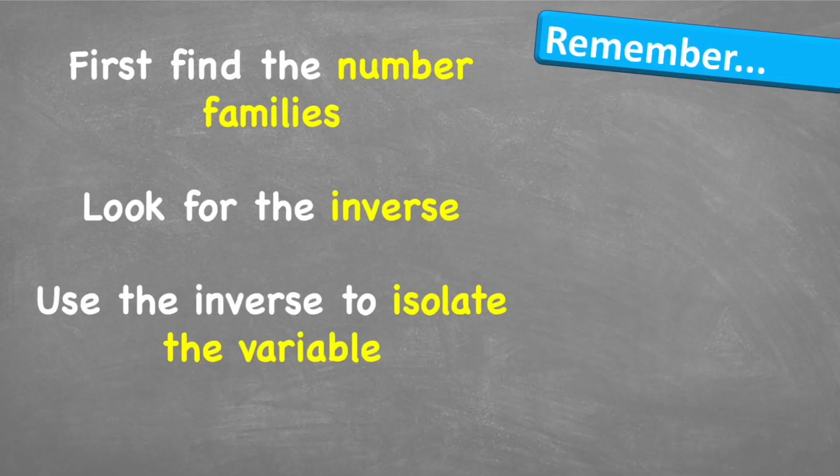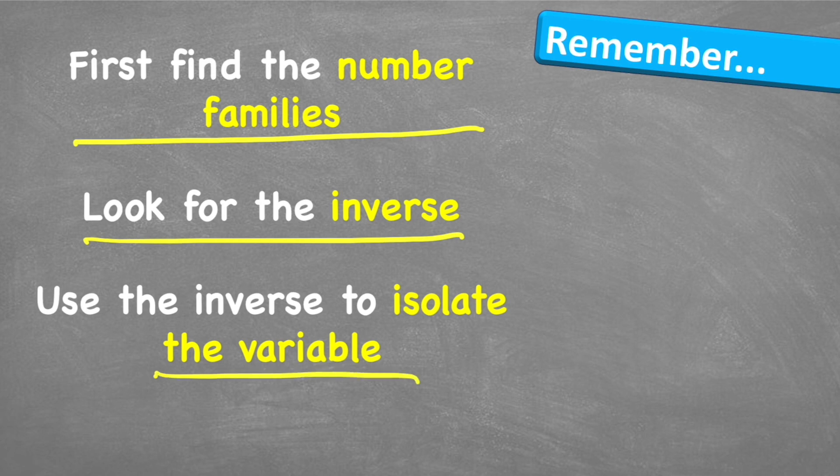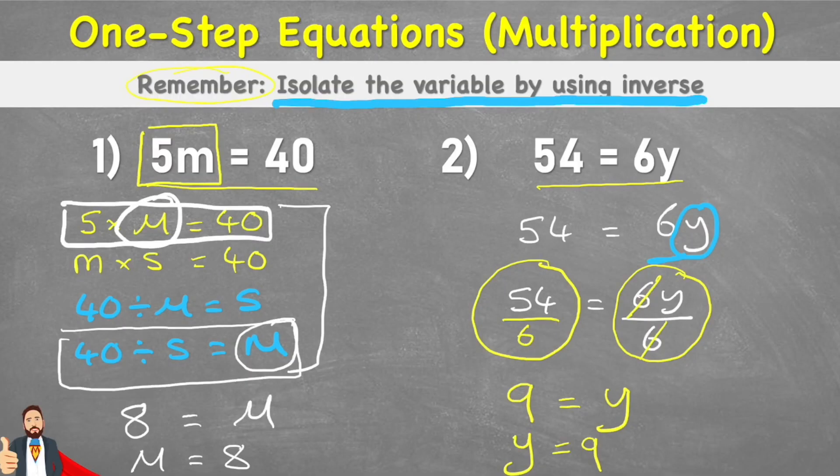Let's look at what to remember. First we're going to find the number families if we choose to do the first method. Then we'll look for the inverse and then we'll use the inverse to isolate the variable. Or in the second method I will see what is connected to my variable, and in this case we had a times 6, and I will use the inverse to cancel it out. But if I use the inverse on one side I have to then use it on the other side too, and that way I can isolate my variable to give me the answer.